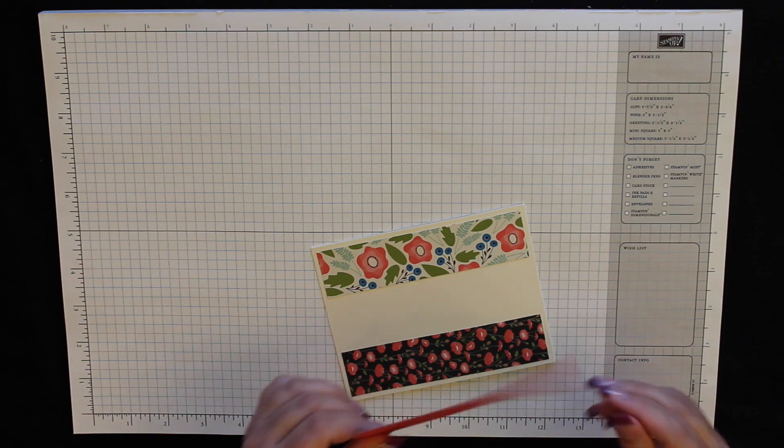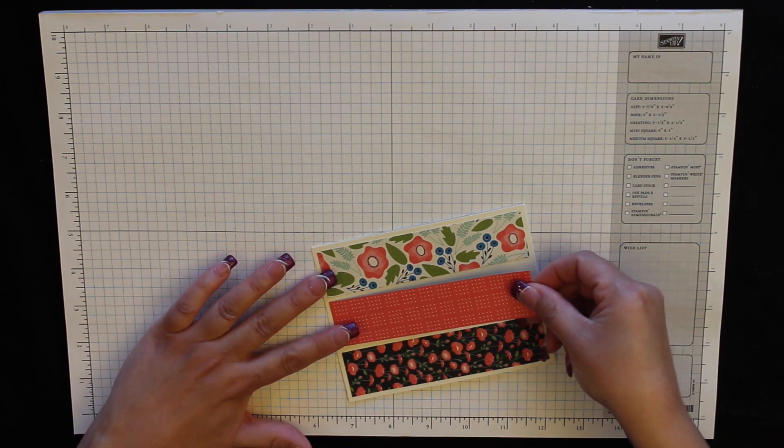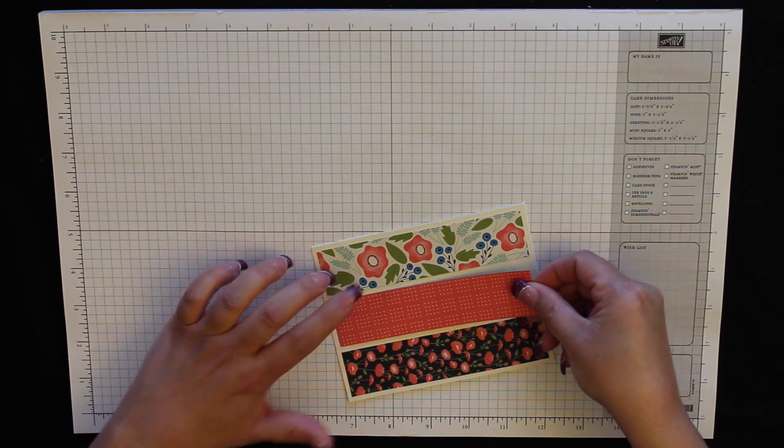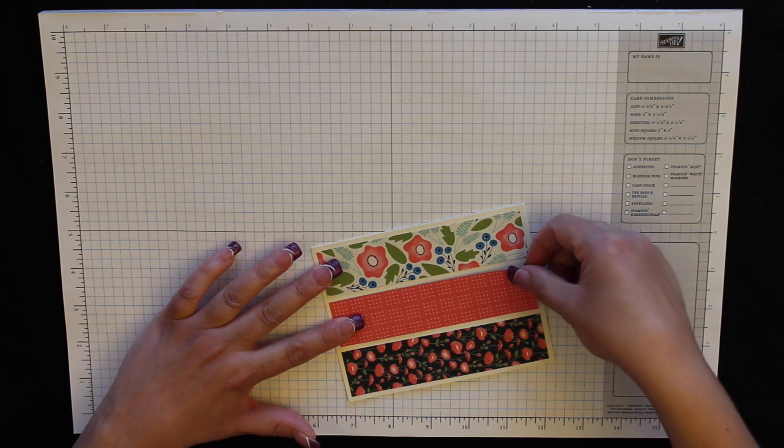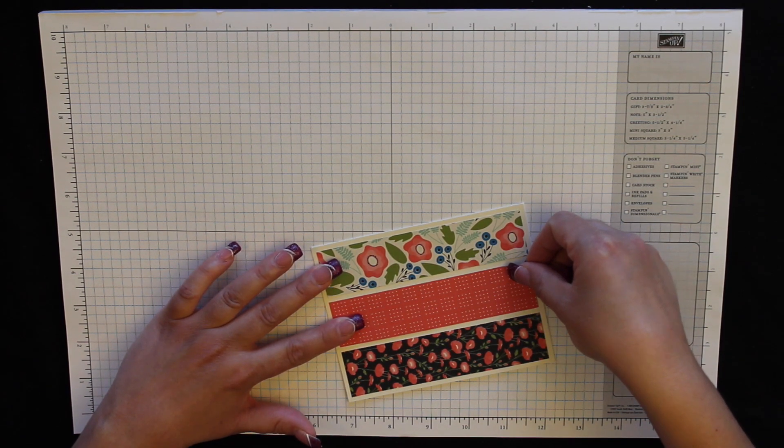And the reason you do this is when you do the middle piece it's easy just to divide the space between these two strips evenly in half and then they're all placed equidistant.